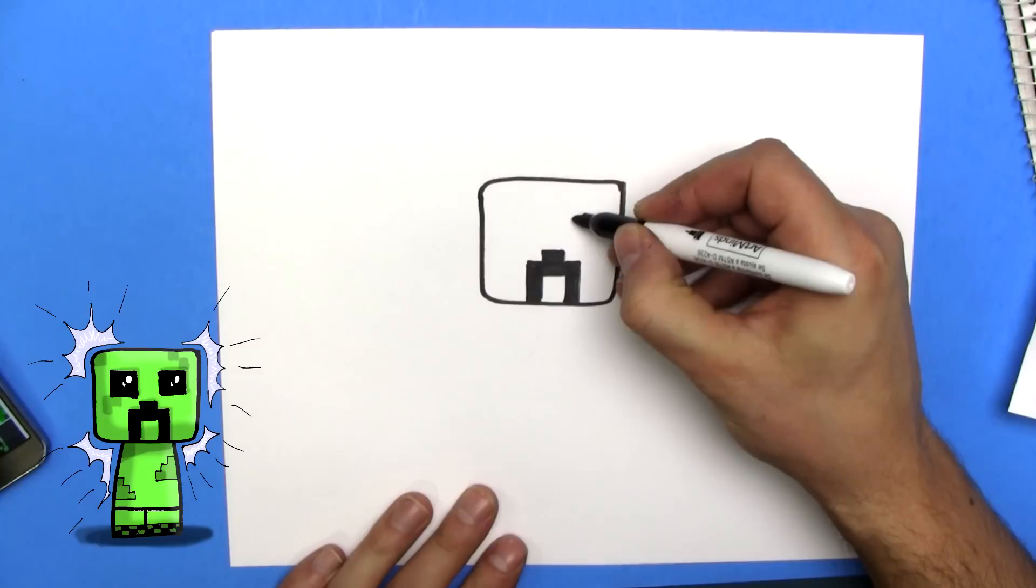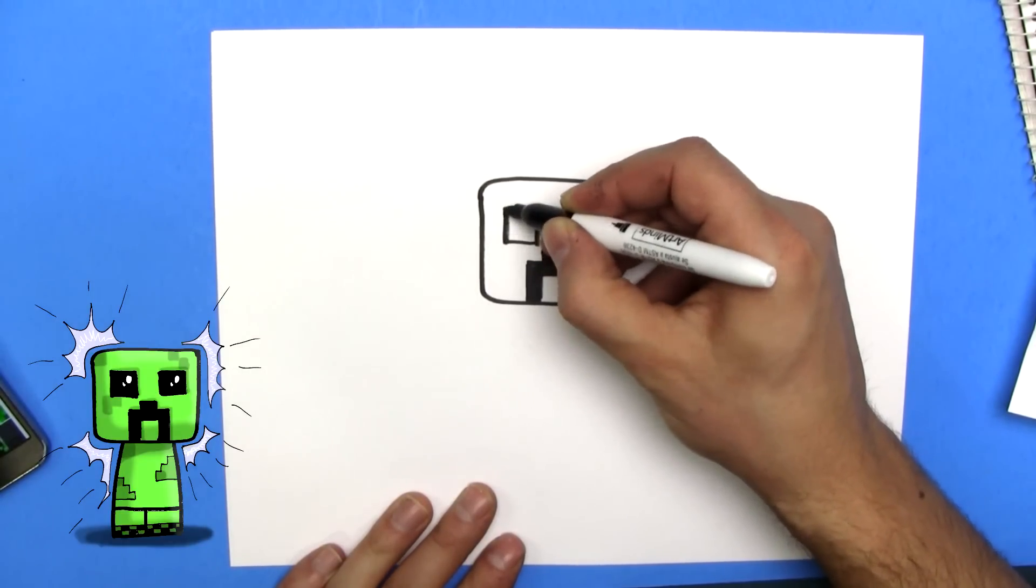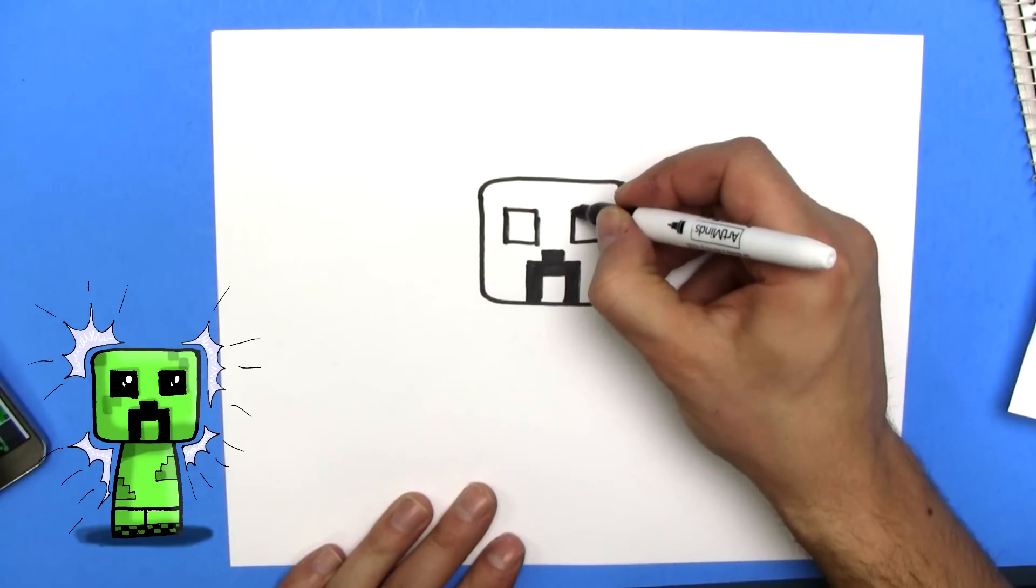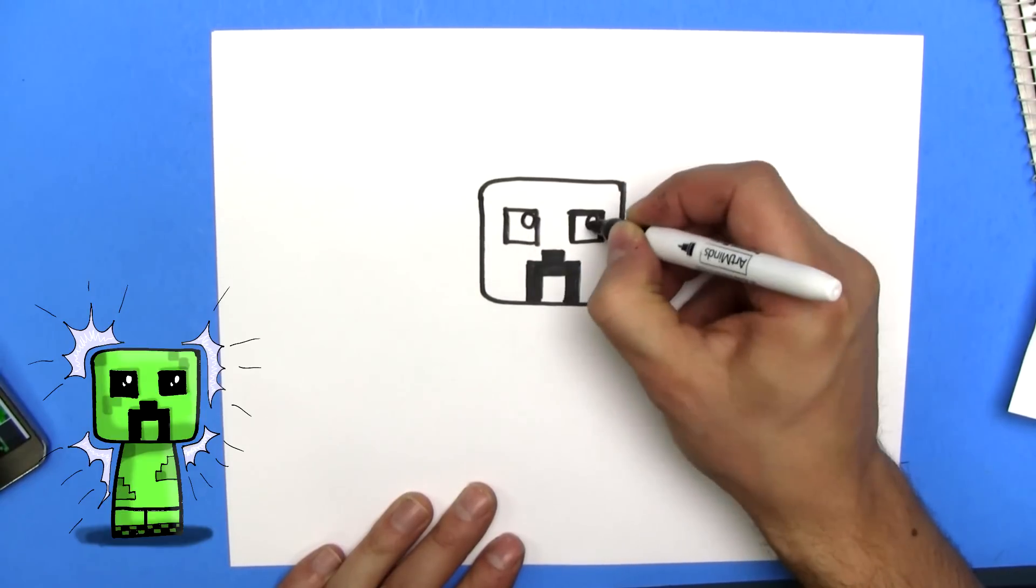Next up, we're going to do his eyes, and they're going to be right here, one, two. We've got one a little bigger to match. I'm going to put a circle here, and a circle here,